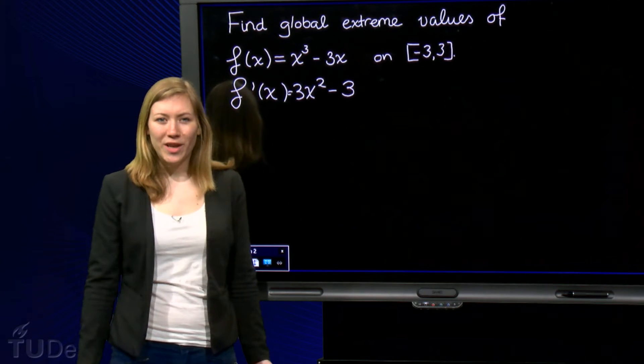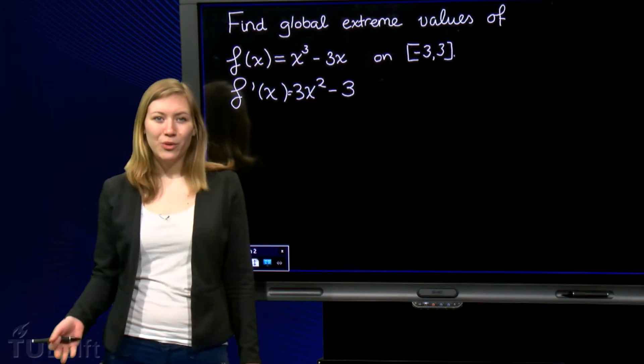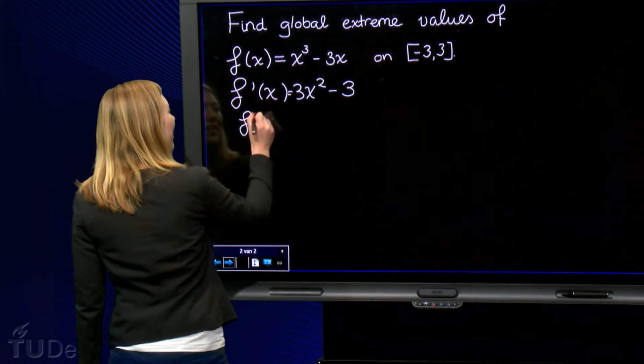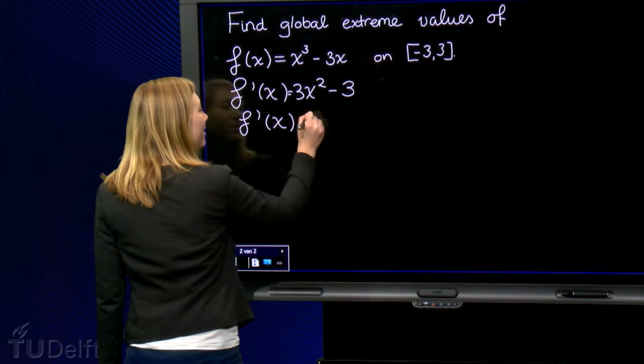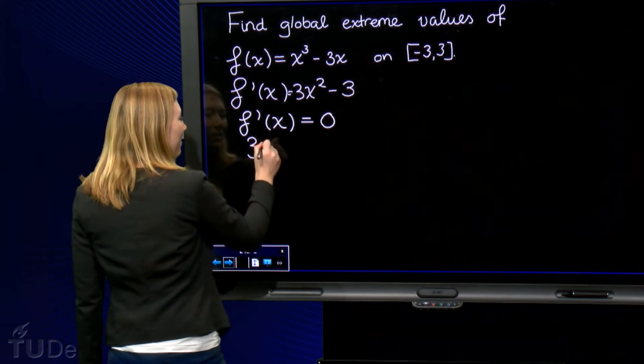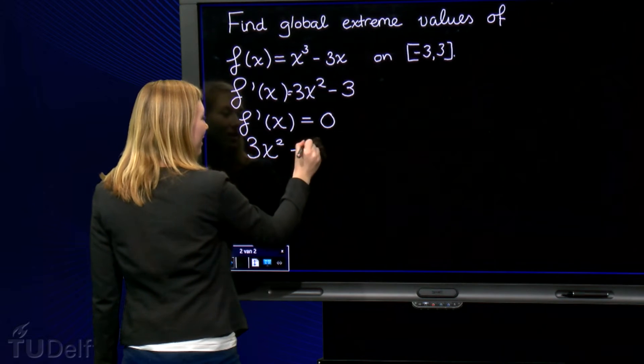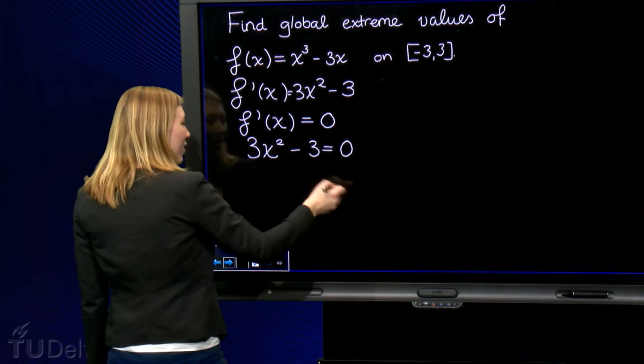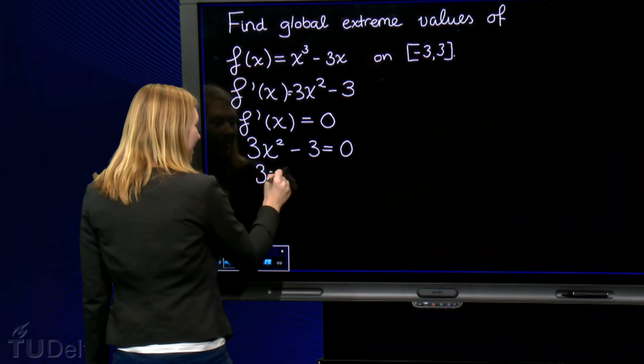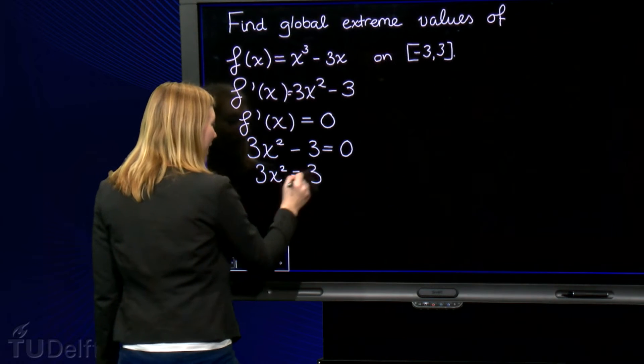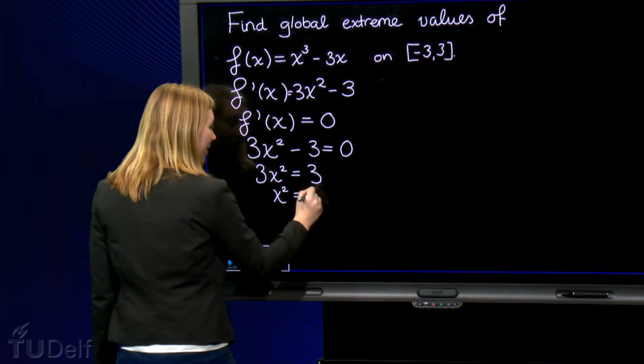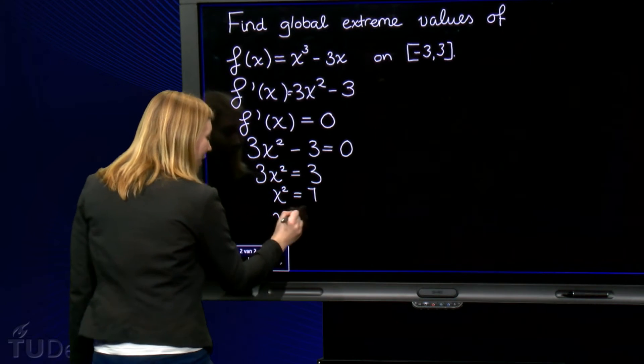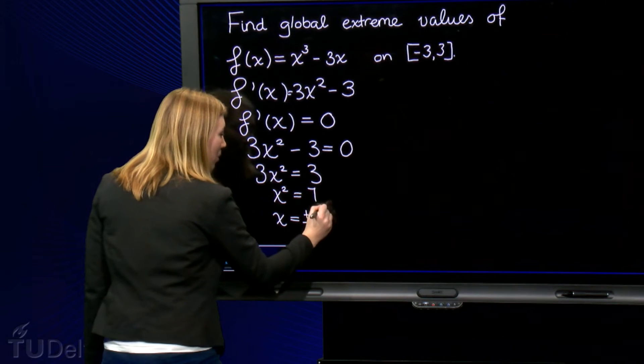We know that the extreme values can occur at critical points, so we set the derivative equal to 0 and we solve for x. So we set the derivative equal to 0. This is quite an easy function. So we take 3 to the other side, divide by 3 and we get our values x is plus minus 1.